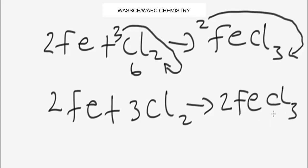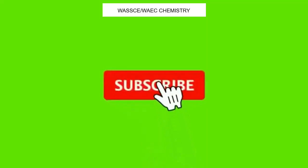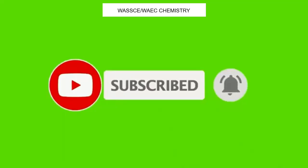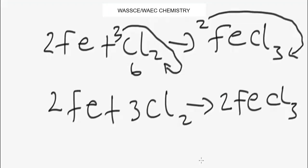That's iron(III) chloride. This is basically how you can balance chemical equations. If you found this video interesting, check the description below for a link to our Telegram channel for instant notifications. Also make sure you are subscribed and hit the like button. Feel free to leave any questions in the comments below and I'll be sure to respond. See you in the next video — thanks for watching.